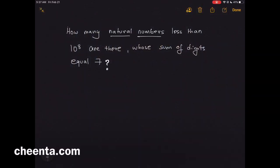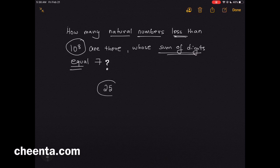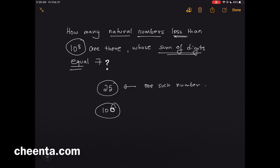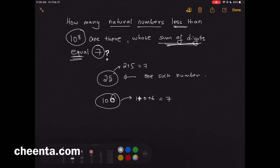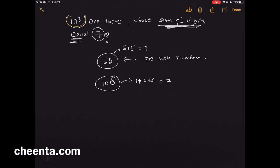How many natural numbers are there which are less than 10 to the power 8 whose sum of digits is equal to 7? For example, 25 is one such number. Similarly, 106 is another such number — 2 plus 5 is 7, and 1 plus 0 plus 6 is equal to 7. The condition is that we are only looking at numbers which are less than 10 to the power 8.